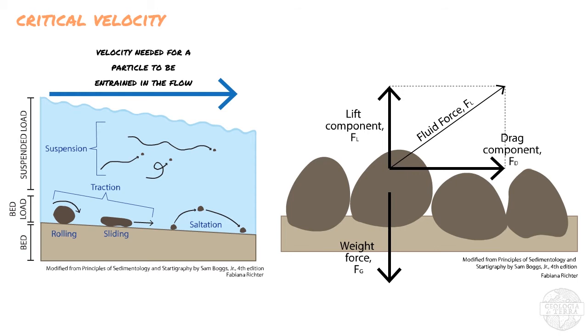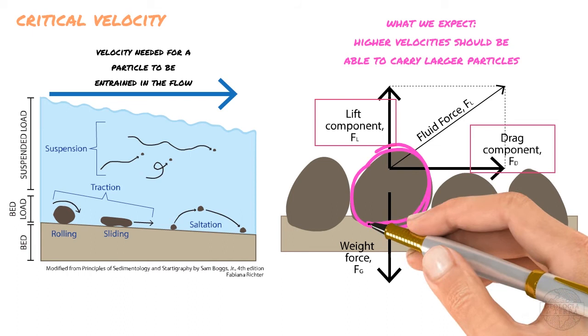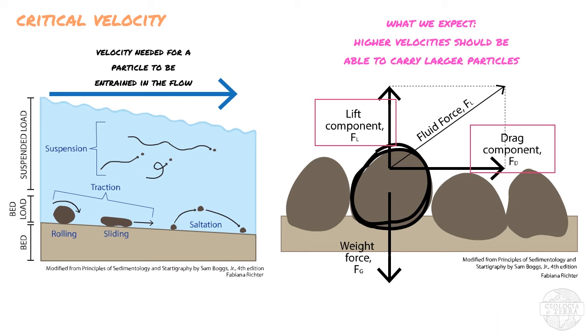We would expect a simple relationship between the critical velocity and the mass of the particle, because the critical velocity will control the drag and lift forces and those will increase with particle mass. A simple and linear relationship between critical velocity and mass can be applied to sand and gravel, but things are more complicated when finer grain sizes are involved.